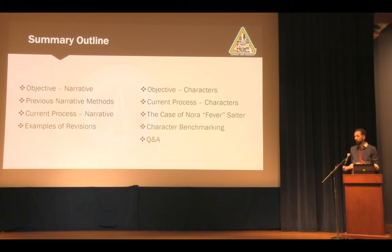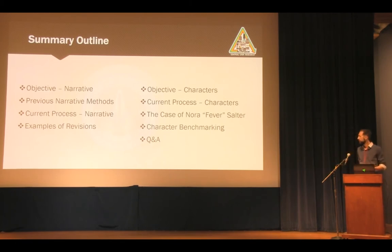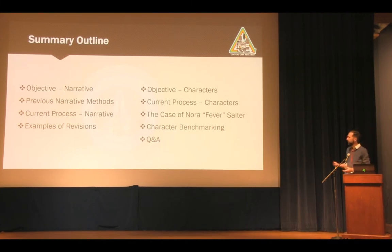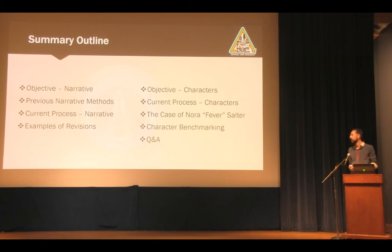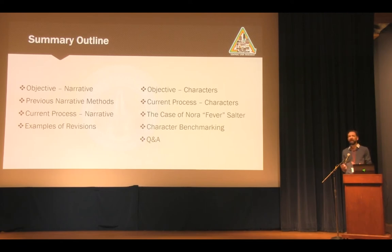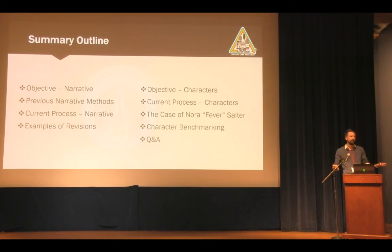After that we'll talk about the current process we used on Infinite Warfare, and give examples of revisions made in reaction to those findings. Then we'll move to the character side — what our primary objective is when looking at characters, the current process for that, an extended example of one specific character that had a lot of improvement over the course of the project — Nora Salter, your executive officer — and a quick note on character benchmarking.